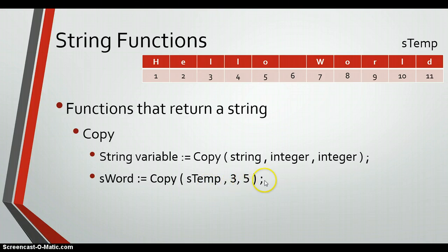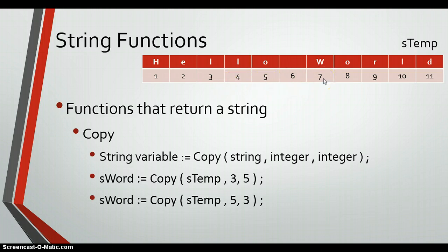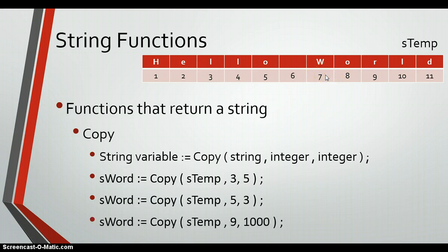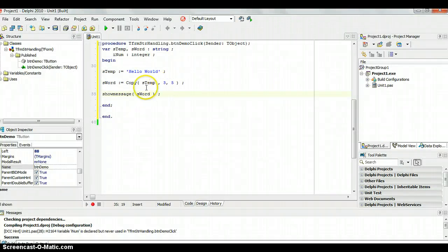For example, copy from sTemp starting at position three for five characters will start at the 'l' and give you 'l', 'l', 'o', space, and 'w' — that's five characters. If you copy from position five for three characters, you get the 'o', the space, and then the 'W'. If you put something like copy from position nine for a thousand characters, it won't give an error — it will simply copy what it can up to position 11.